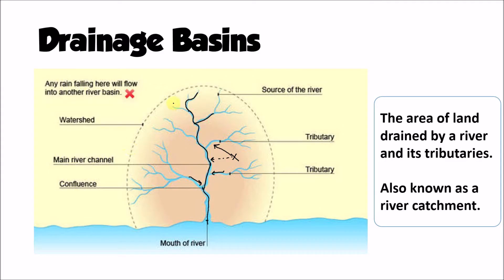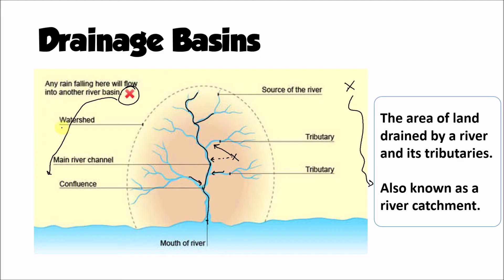Any water that fell outside of that drainage basin — outside of that dotted line — is part of a different drainage basin and might flow off somewhere else to become part of another river flowing in a different direction. The term we use for the edge of the drainage basin is the watershed: an imaginary line that separates one drainage basin from another. It's normally marked by a series of hills or mountains, so water falling on one side ends up in one basin, and water on the other side ends up in a different basin.